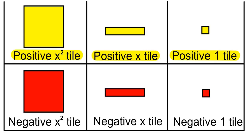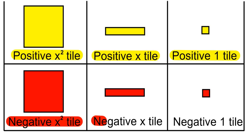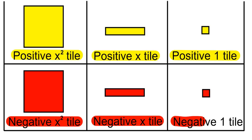The large red square tile is represented by negative x squared. The red rectangular tile is represented by negative x, and the small red square tile is represented by negative 1.